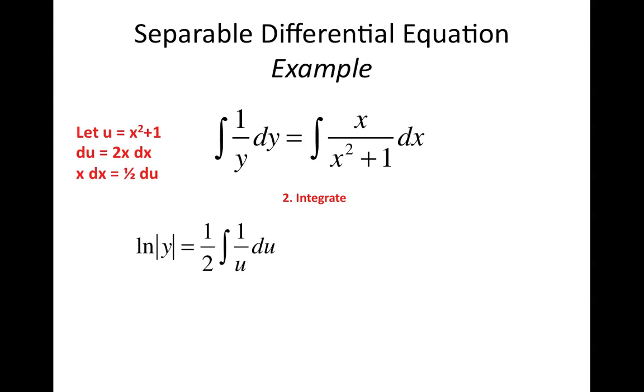The right hand side is a little bit trickier. We're going to do a u substitution here. We're going to let x squared plus 1 equal u, and that means that du, so differentiate both sides of u equals x squared plus 1, equals 2x dx. You can see on the right hand side of our equation, inside the integral, we actually have an x dx. If we let that 2 be divided on both sides, you get x dx equals 1 half du.